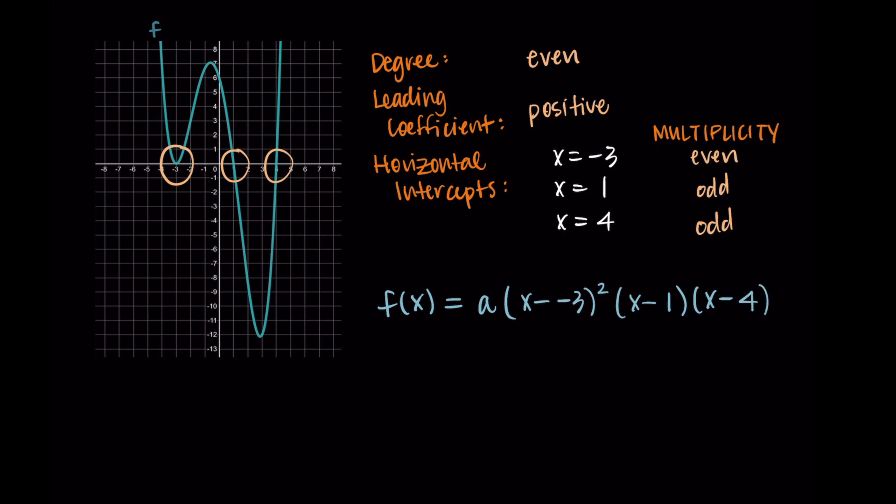The x minus one and the x minus four have degree one, so there's like a one exponent on the outside. We don't usually write that. That's the odd multiplicity, and that's the minimum degree. We don't want to put a three or a five as the exponent. We just want to take the minimum and put a one as the exponent. Then for x minus negative three, this gets a two, since that is our smallest even number that we can put as the exponent.